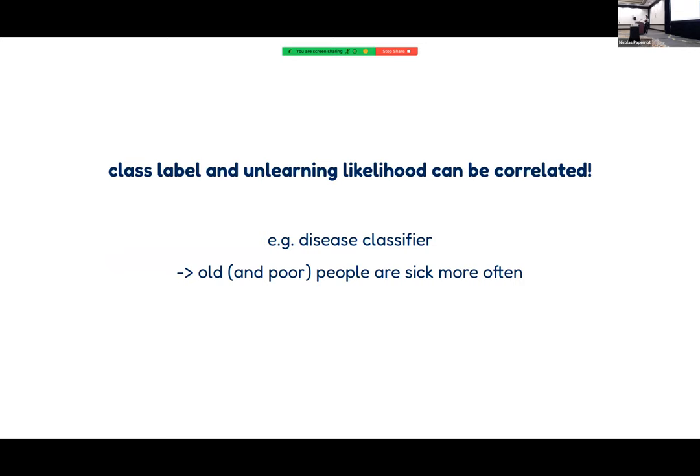The problem this creates is that class labels in your task and unlearning likelihood can be correlated. For example, if you're training a disease classifier, samples with the disease label are, on average, going to be older and also poorer than an average citizen. We investigated whether this creates problems with SISA by repeating essentially the experiments from before, artificially increasing or lowering the average unlearning likelihood that a service provider might assign to a specific sample.